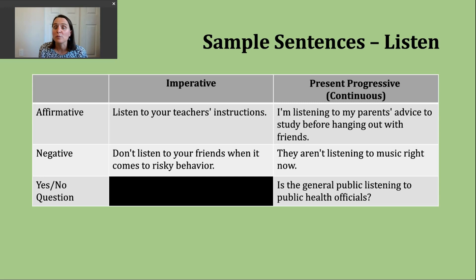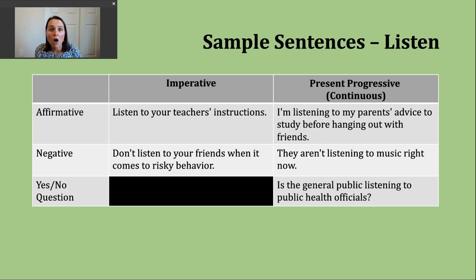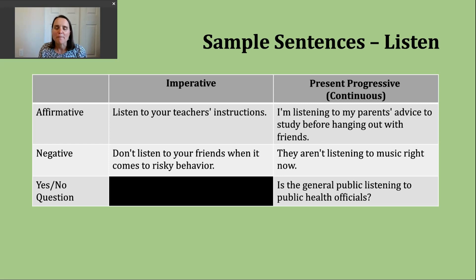Now we can move to the present progressive or present continuous. We use this tense to talk about an action that is in progress or happening right now. To form it, we need two parts: a present form of "be" — am, is, or are — and then the -ing form of the verb. The affirmative example: "I'm listening to my parents' advice to study before hanging out with friends" — going back to that meaning of comprehending what is said and then acting a particular way. Many speakers use the contraction I'm, but "I am listening" is perfectly fine too.